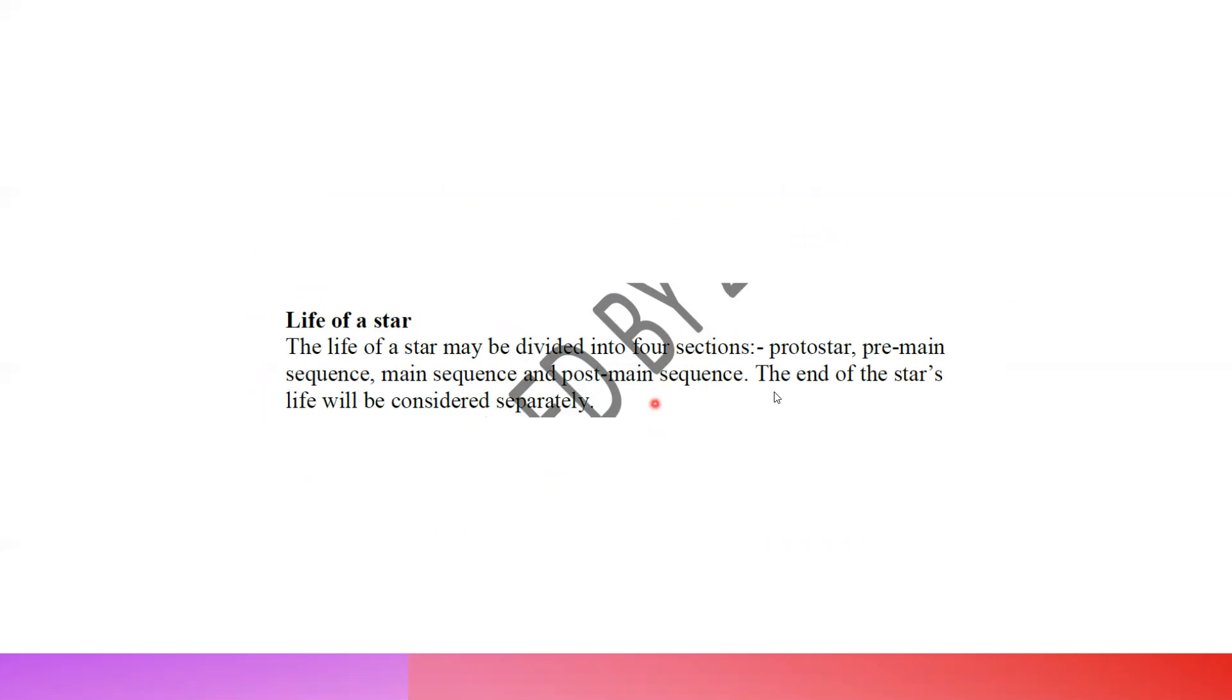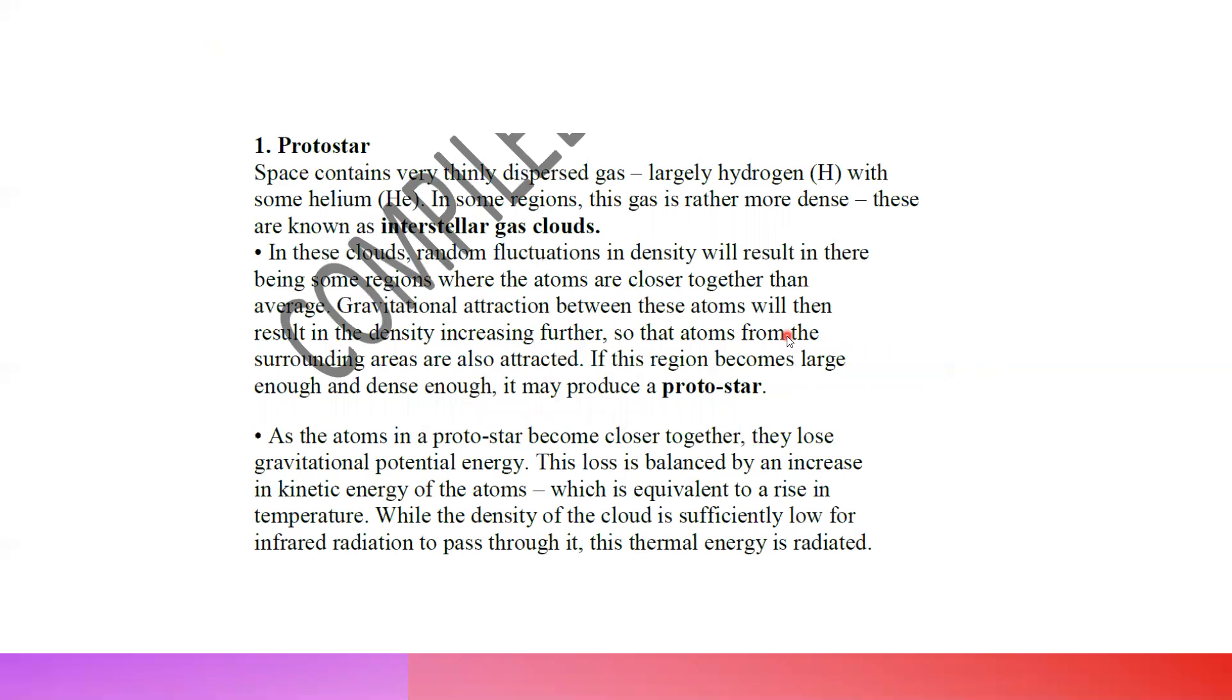The life of a star is divided into protostar, pre-main sequence, main sequence, and post-main sequence. In the protostar phase, hydrogen and helium collide and join together. Gravity causes the particles to come closer to each other.